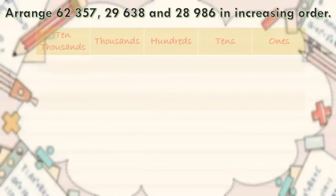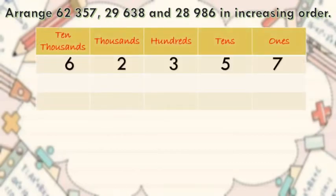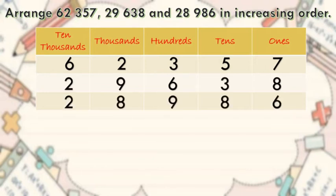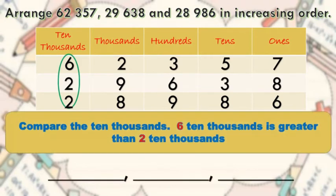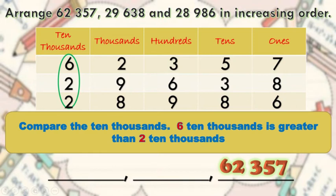Let us arrange 62,357, 29,638, and 28,986 in increasing order. When we say increasing order, that is from smallest to greatest. Let's compare the ten thousands: six ten thousands is greater than two ten thousands. Therefore, 62,357 is the greatest number.